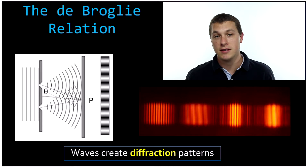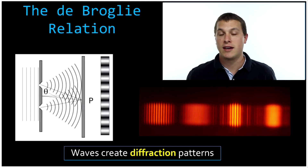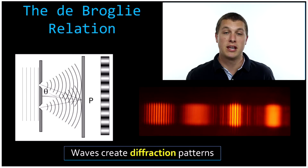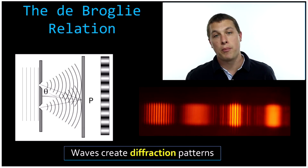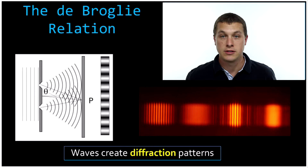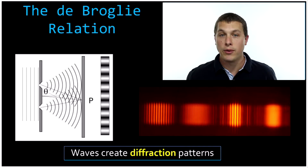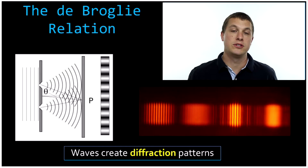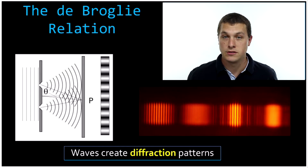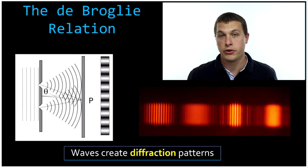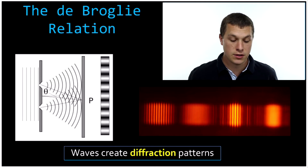Basically what it is, is a way to calculate the wavelength of particles, which is a little weird, right? We're used to thinking about wavelength for light or for water, but it turns out particles actually have wavelengths too. So the first thing we're going to do in this video is talk about why we think particles have wavelengths, and the second thing is show you how to calculate those wavelengths using the de Broglie relation. So first, why do we even think particles have wavelengths?